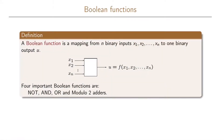In order to get some understanding about the realization of our state machines, we're going to discuss boolean functions. A boolean function is a mapping from n binary inputs, denoted x1, x2 up to xn, to one binary output, denoted u.